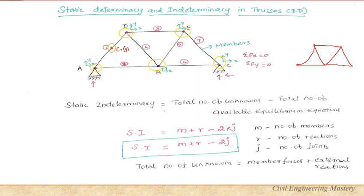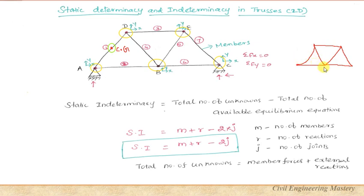The next point is that when we analyze a truss, the bending moment due to the self-weight of the member should be neglected. Since self-weight acts at the center of gravity of the member, bending moment will again develop. The third point is that all members in a truss should be perfectly straight — curved members cause bending moment and the structure becomes a frame.